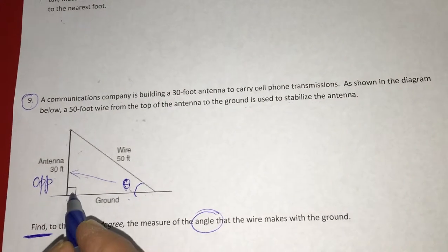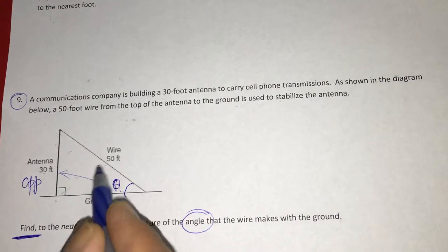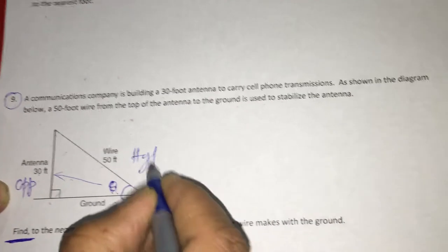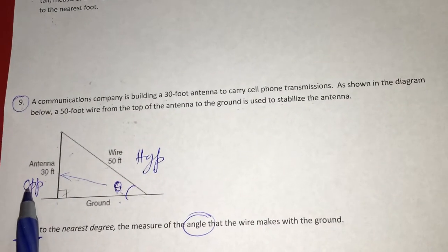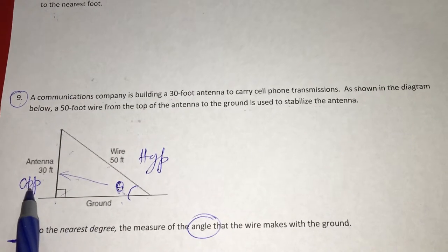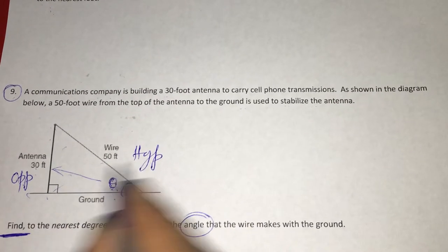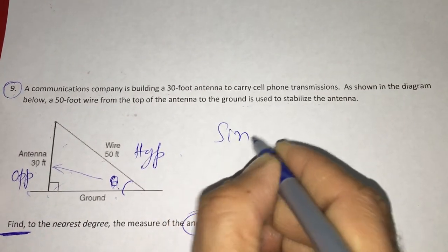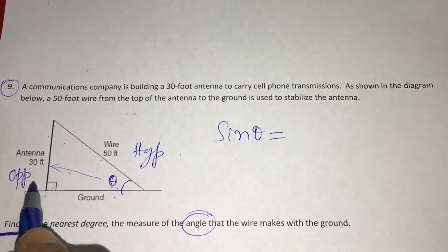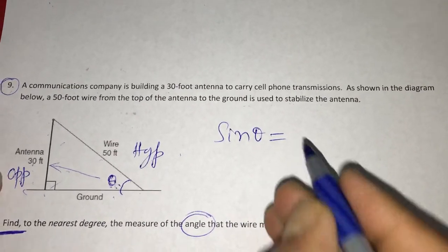Since it is 90 degrees and this side is opposite to 90 degrees, we call it the hypotenuse. Now the ratio that connects opposite side and hypotenuse is sine theta. So from the figure, sine theta is equal to the opposite side, which is 30 feet, over the hypotenuse, which is 50 feet.